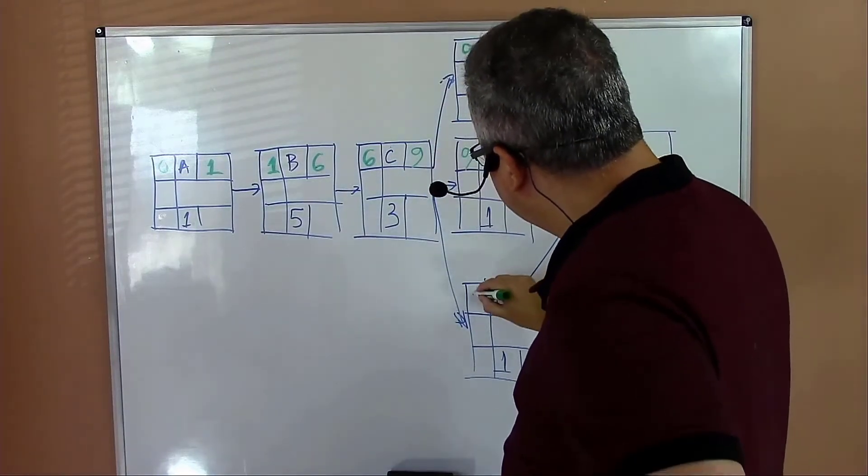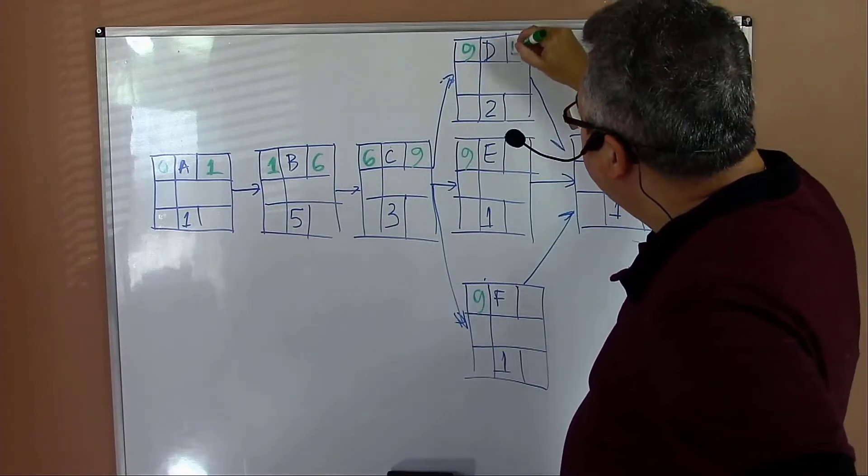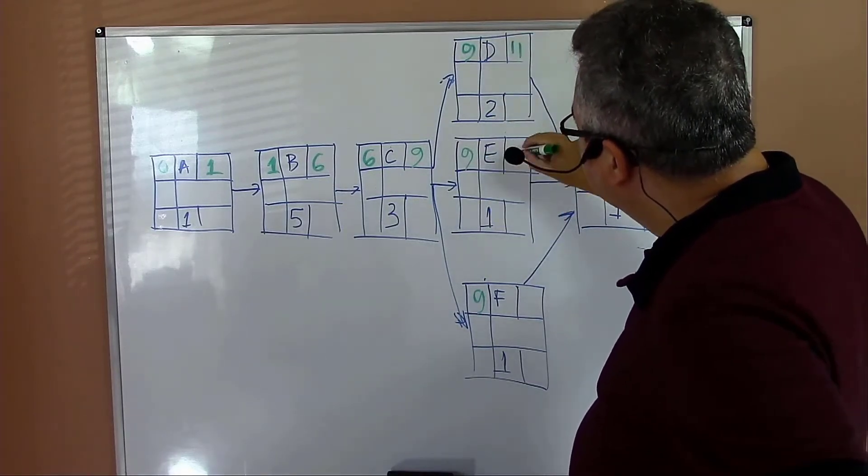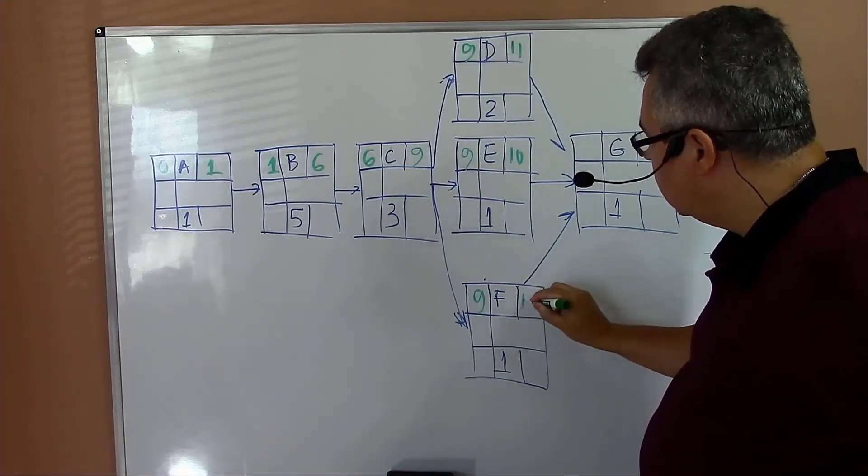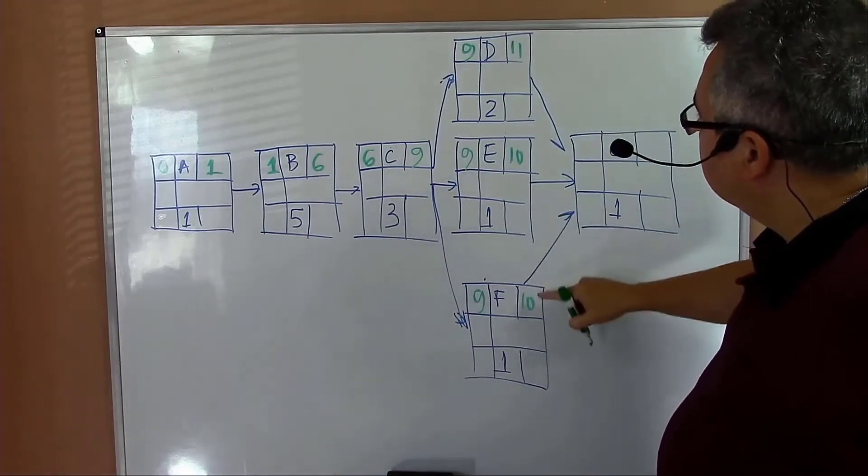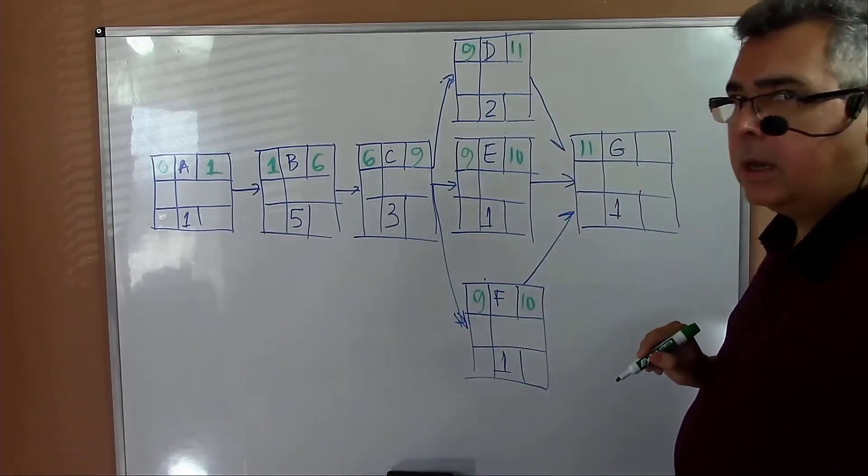Activity nine plus two equals eleven. Activity E: nine plus one equals ten. Activity F: nine plus one equals ten. Then I have here ten, ten, eleven. Because it's a forward pass, I'll be moving the highest: eleven plus one equals twelve. That's the forward path.